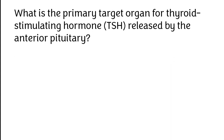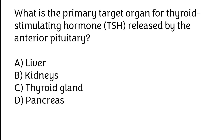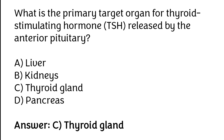What is the primary target organ for the thyroid stimulating hormone TSH released by the anterior pituitary? Liver, kidneys, thyroid gland. The correct answer is option C: the thyroid gland is the primary target organ for thyroid stimulating hormone TSH released by the anterior pituitary.